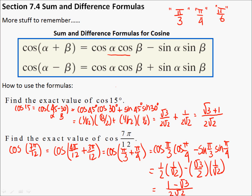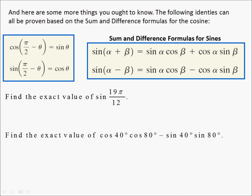We'll see it here with the sine of 19π/12. I'm not going to try to justify the sum and difference formulas — certainly you can prove them, and I think the book does it. So if you're interested, you can take a look at it. You don't have to know how to prove these, but you do need to know how to break them up. So what can I break 19π/12 into so that it's in parts that I know?